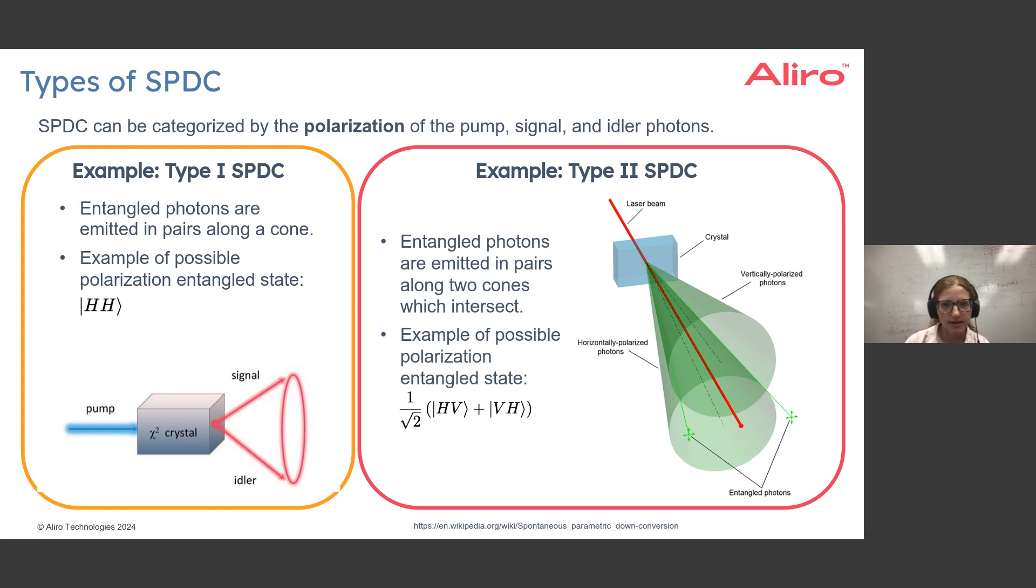We can also have Type 2 spontaneous parametric down conversion, and one way to get this is by having these entangled photons emitted in pairs along two cones which are intersecting, and then considering the intersection points for these cones to obtain the entangled photons.